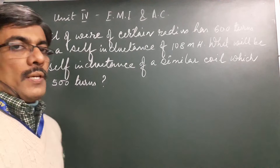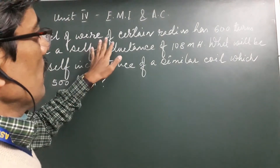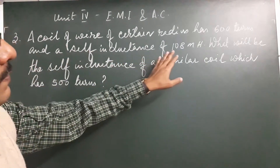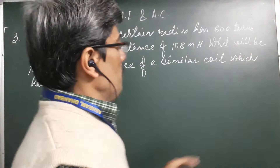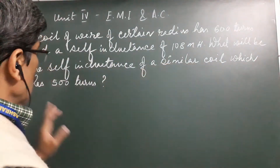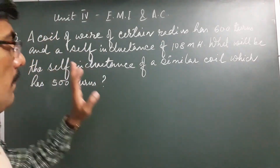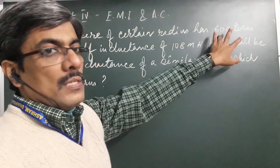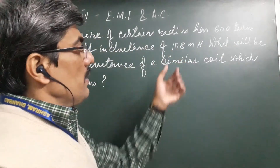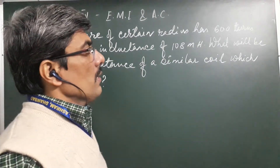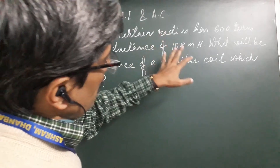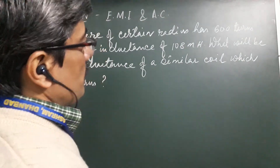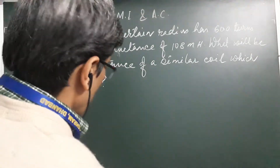The next question today: a coil of wire of certain radius has 600 turns and a self-inductance of 108 millihenry. What will be the self-inductance of a similar coil which has 500 turns? This wire is wound in the form of a coil having 600 turns and a self-inductance of 108 mH. A similar coil means it is made of the same wire with the same area and same length, but having 500 turns.